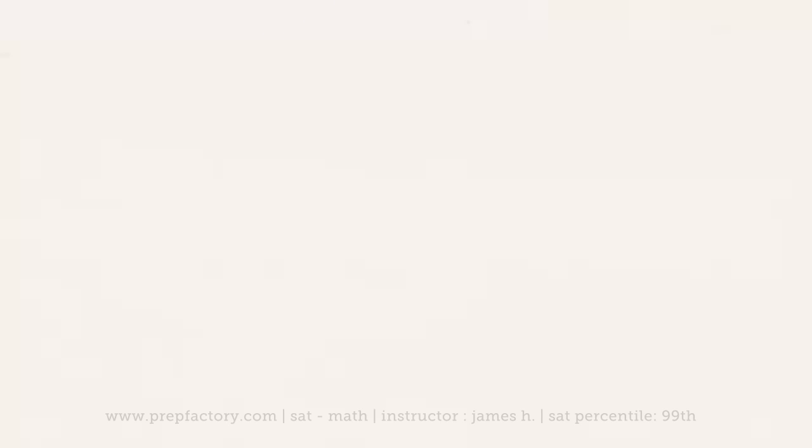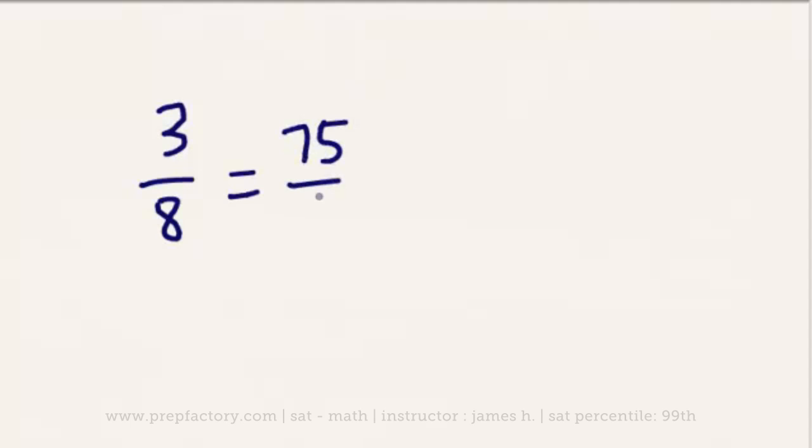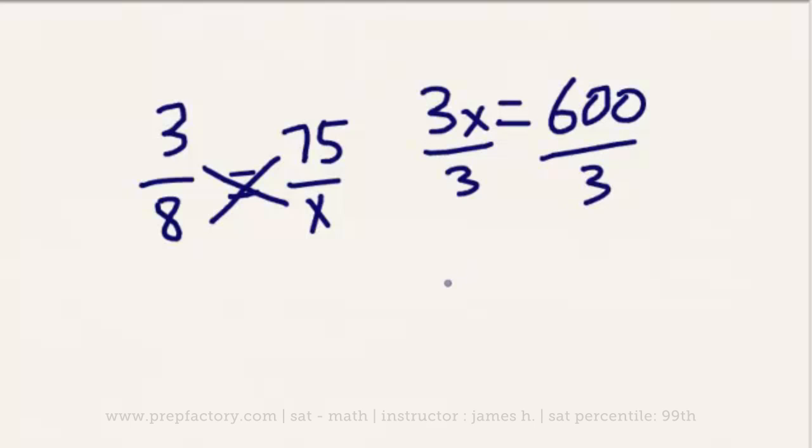So if 3-8 of her original amount equals 75 over her original total, which will be x, of course, we're then going to be able to cross-multiply again, of course. And we're going to come out with 3x equals $600. So if 3x equals $600, we just divide both sides by 3, divide both sides by 3, and very logically, we're going to find out that our x is equal to $200. So Sandra had $200 in her bank account to begin with. All right, so those are ratios.